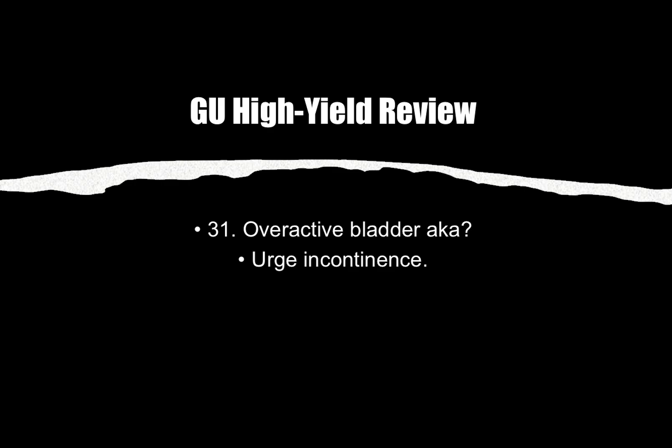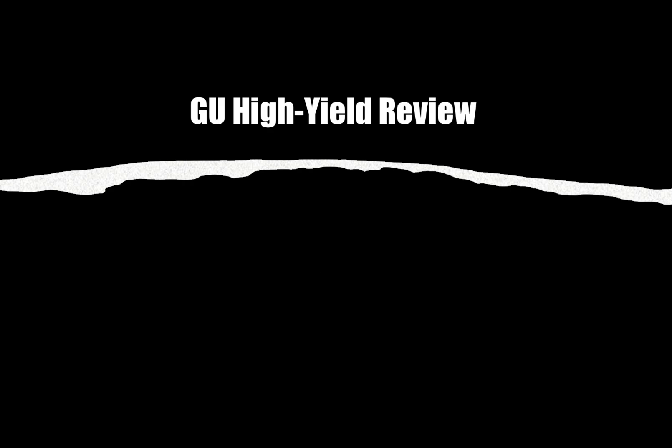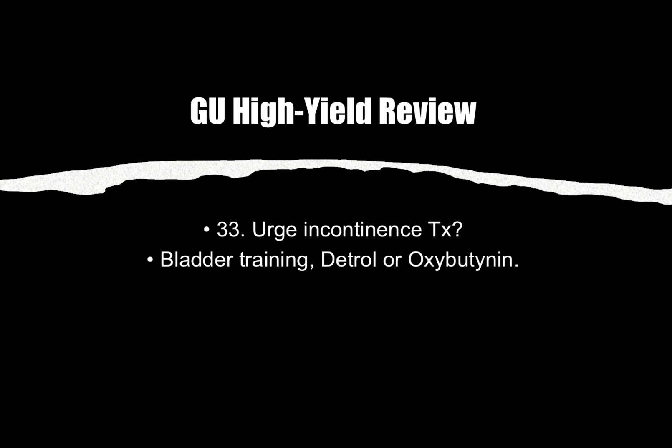Number twenty-nine through thirty-three: Overactive bladder is also known as urge incontinence. Urge incontinence is due to detrusor muscle overactivity. In the stem they may ask which muscle is most likely involved — know that detrusor muscle overactivity leads to urge incontinence. Treatment is bladder training, Detrol, or oxybutynin. If you see a patient taking oxybutynin, think diagnosis of urge incontinence.